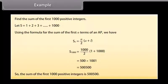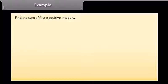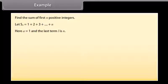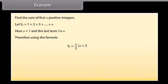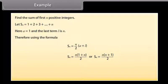So the sum of the first 1000 positive integers is 500500. Find the sum of the first N positive integers. Let SN equal 1 plus 2 plus 3 plus so on plus N. Here A equals 1 and the last term L equals N. Using the formula SN equals N over 2 times (A plus L), we get SN equals N times (1 plus N) all over 2, or SN equals N times (N plus 1) all over 2.